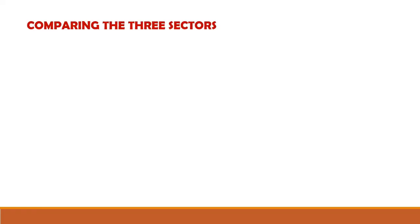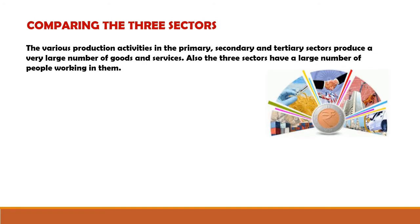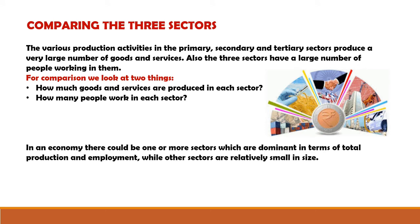Comparing the three sectors: the various production activities in the primary, secondary and tertiary sectors produce a very large number of goods and services. Also the three sectors have a large number of people working in them. So for comparison we look at two things: how much goods and services are produced in each sector, and how many people work in each sector. In an economy there could be one or more sectors which are dominant in terms of total production and employment, while other sectors are relatively small in size.